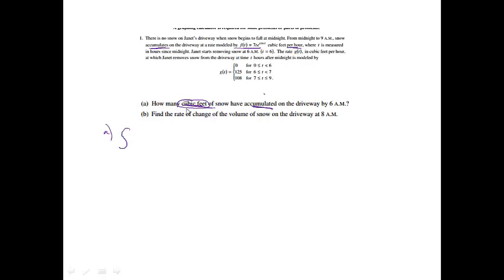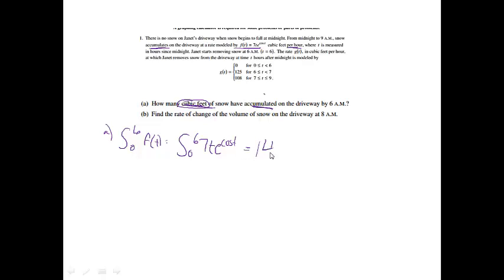To get how much snow has accumulated on the driveway, I'm going to integrate from 0 to 6 — it started at t equals 0 and we're stopping at 6. I can rewrite this as the integral from 0 to 6 of 7t times e to the cosine t. Letting my calculator do the work, I get 142.275, and my label should be cubic feet of snow.